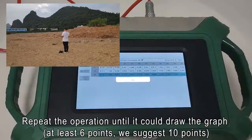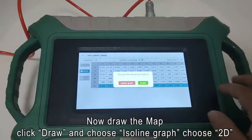Repeat the operation until it could draw the graph. At least 6 points. We suggest 10 points.